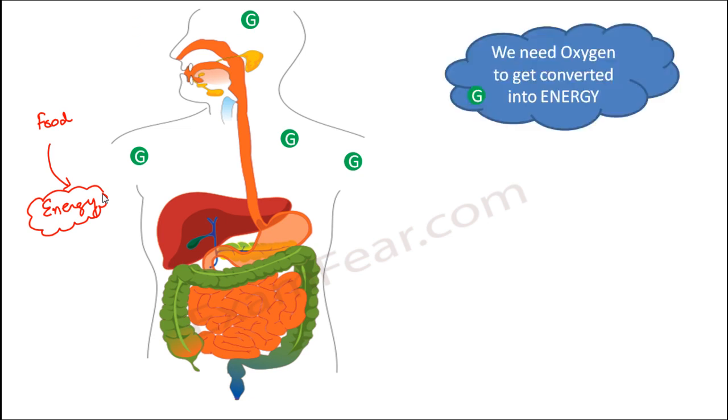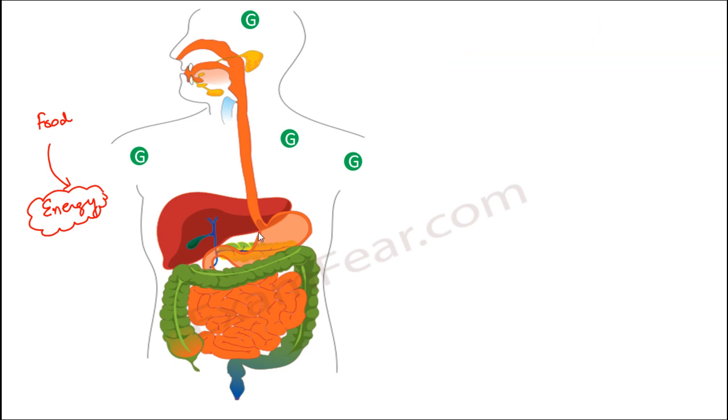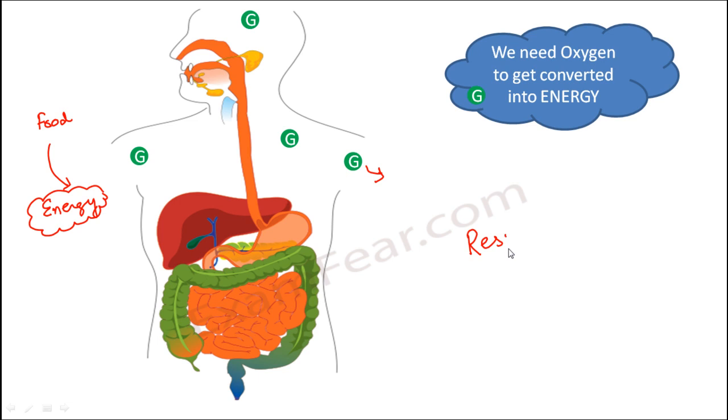So what do we need? We need oxygen because this simplest form of food, which is absorbed by different cells of our body, so that food needs to be converted into energy because that food directly, even that simplest form of food, which is normally glucose, this cannot directly give us energy. So that conversion, what is that conversion? So that conversion is where respiration comes into picture.